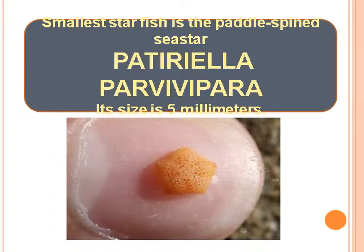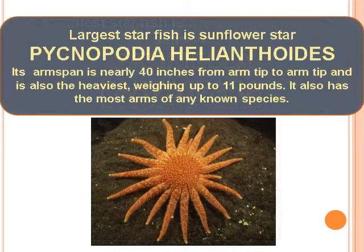The smallest starfish is the Paddle Spined Sea Star, Pateriola Parvi Vivipera. Its size is 5 mm. The largest starfish is the Sunflower Star, Pycnopodia Helionthoidus. Its arm span is nearly 40 inches from arm tip to arm tip, and it is also the heaviest, weighing up to 11 pounds.